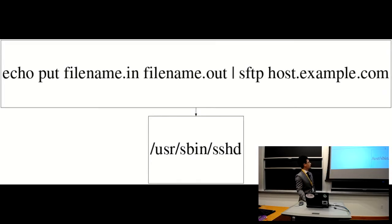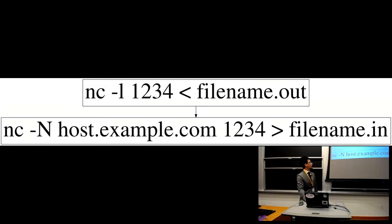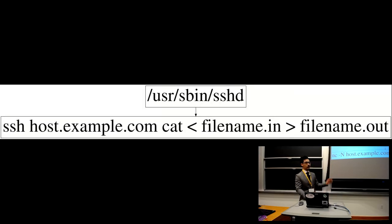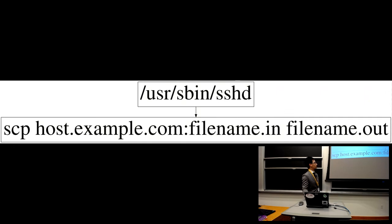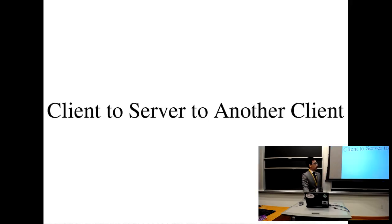The other way is server-to-client, where we just reverse all the previous commands. Here the top one is the client — it's listening on a port, I guess UDP — one is listening and one is connecting, and then the file gets sent. In all these cases the client is telling the server 'I want to get a file from you.' Those are the expert methods.